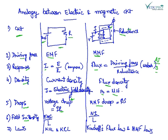Field density is EMF upon length, and this is N into I upon L. The laws which are applicable in electric circuit are KVL and KCL, whereas the laws applicable in magnetic circuits are Kirchhoff's flux law and MMF laws.